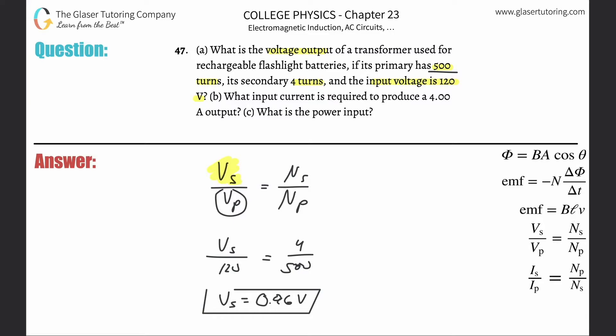Letter B. Okay. Losing my mind. What input current is required to produce four amps of output? All right. So again, we can now use the other equation here for the transformer, right? The secondary current divided by the primary current will be equal to the primary number of turns divided by the secondary number of turns.